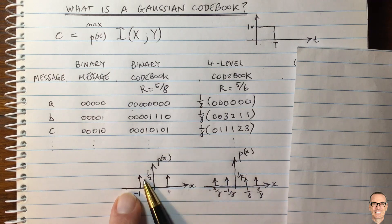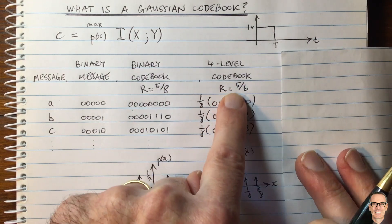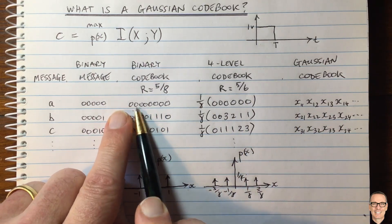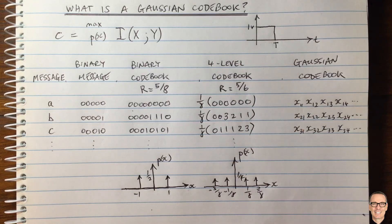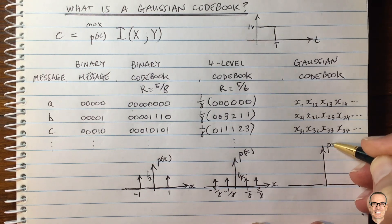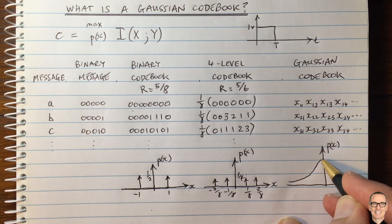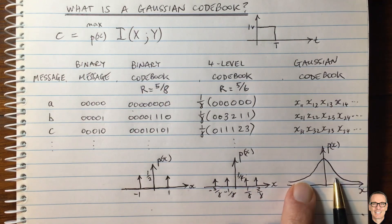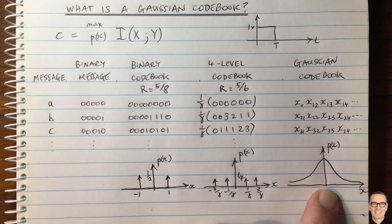This is a different way of thinking about the codebooks — showing the relative occurrence of the four different levels, all equally likely. The four-level codebook is more spread out than the binary one. Now, the Gaussian codebook is the optimal thing to do — it's where the rate is maximized. The Gaussian codebook has codewords whose individual elements are drawn randomly from a Gaussian distribution. This is a natural progression from the two-level and four-level cases.